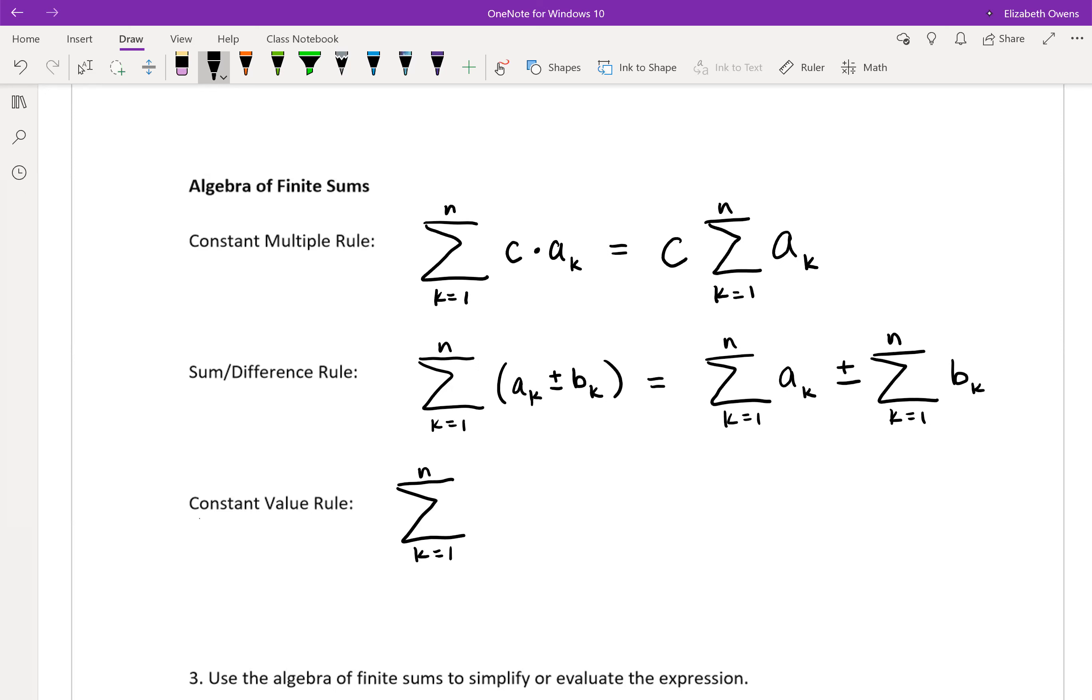So that would look something like this. If you took k equals 1 to n, and then your formula was just like a constant. For this formula, sometimes it's easiest to look at it with an example first.